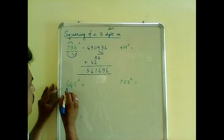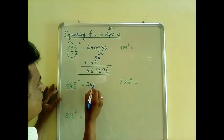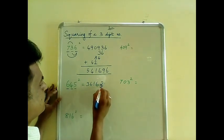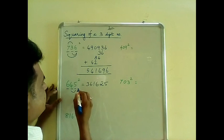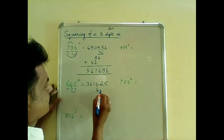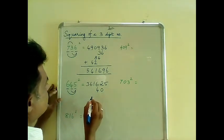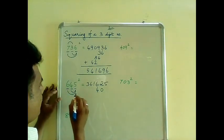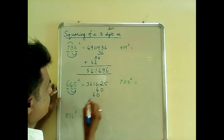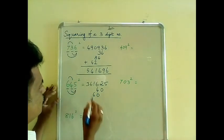Similarly, consider 645 squared. 6 squared is 36, 4 squared is 16, 5 squared is 25. And 2bc is 40. Now 2ac is nothing but 60. And 2ab: 6 plus 4 is 24, 24 plus 4 is 48.